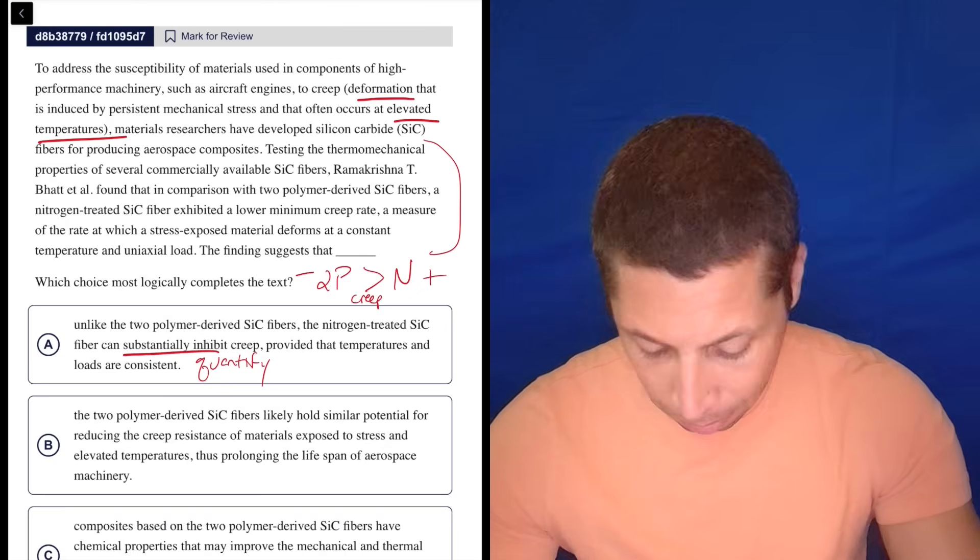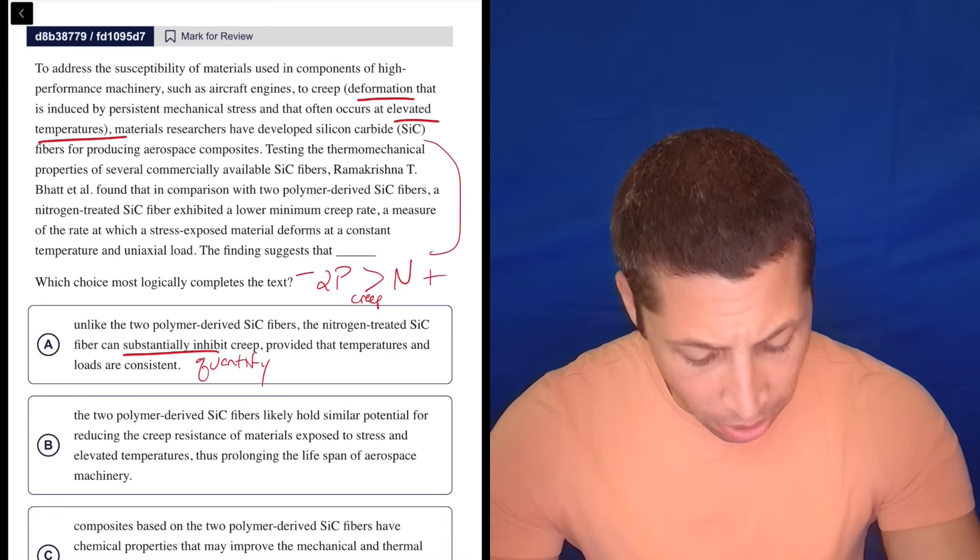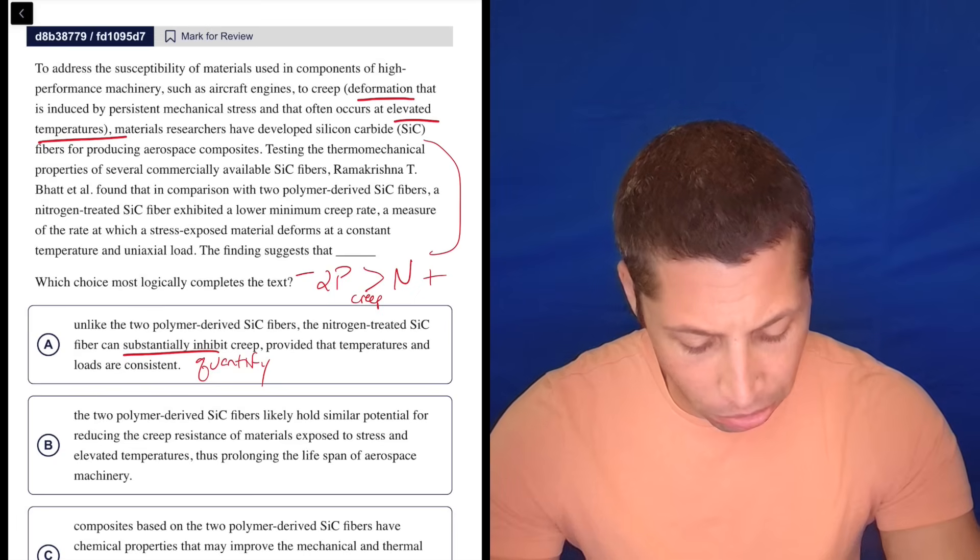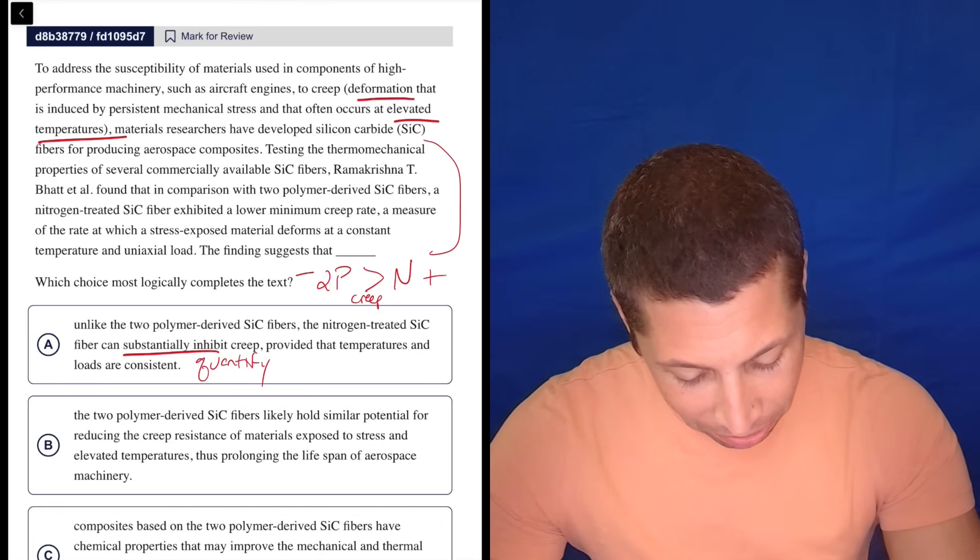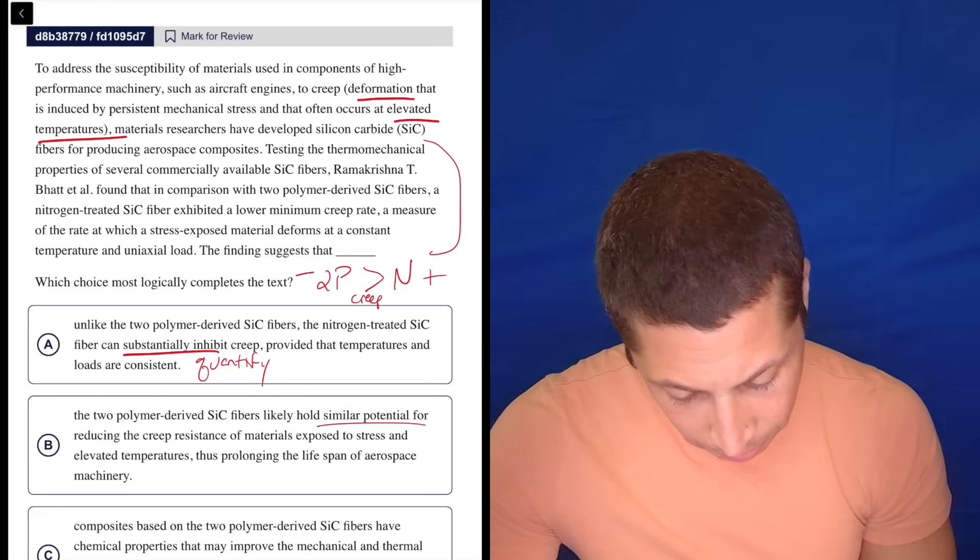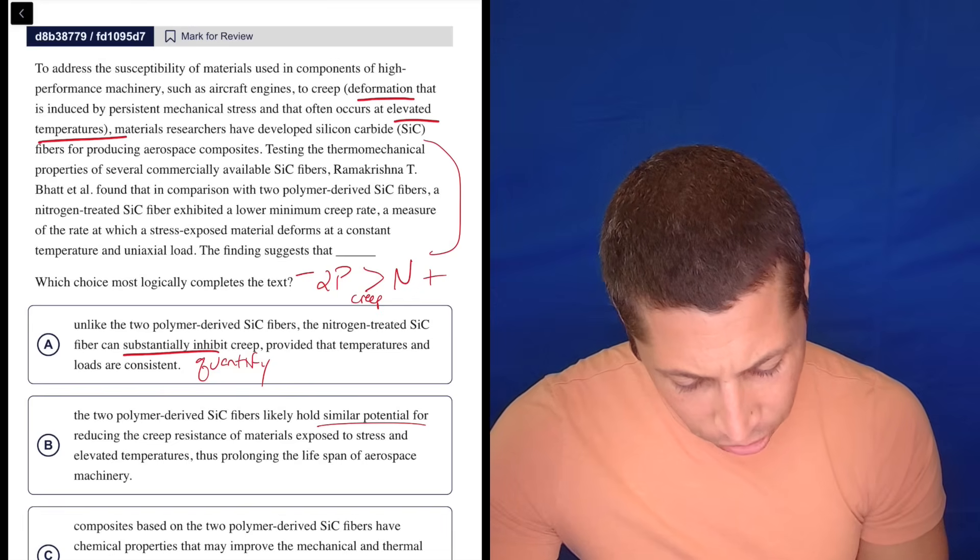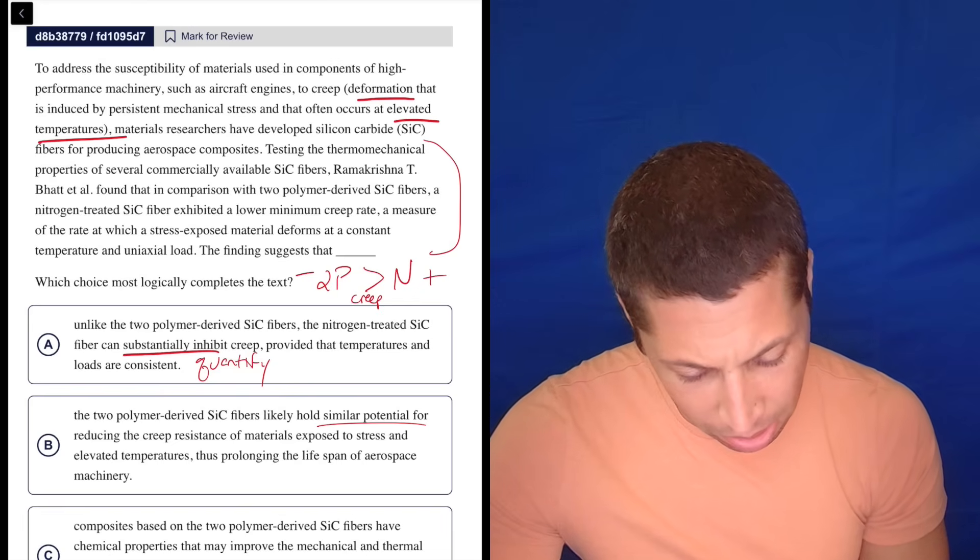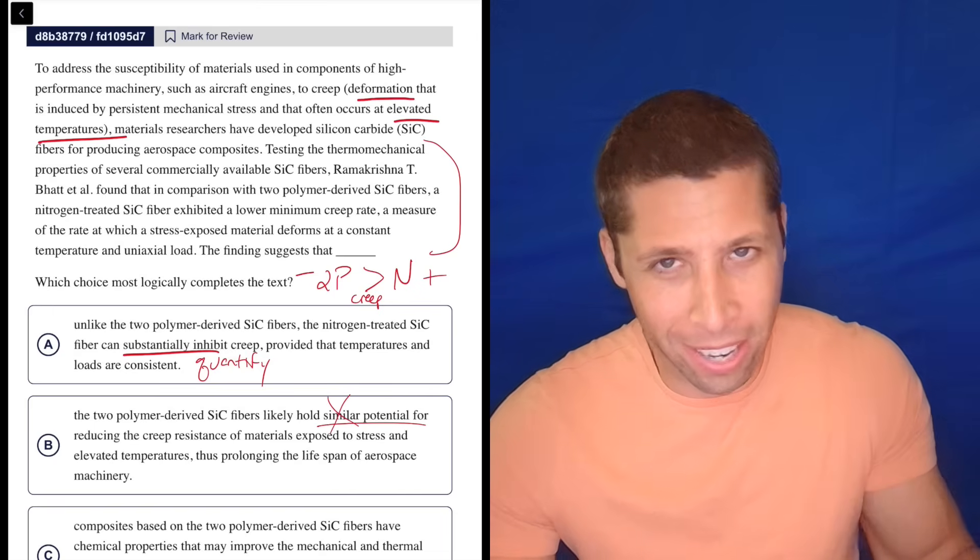The two polymer-derived SiC fibers likely hold similar potential for reducing the creep resistance of materials exposed to stress and elevated temperatures, thus prolonging the lifespan of aerospace machinery. What? So the two polymer fibers hold similar potential—similar to what? Doesn't it need to be similar to the nitrogen one? It's not similar. I think isn't that just wrong? The whole point is it's not similar.